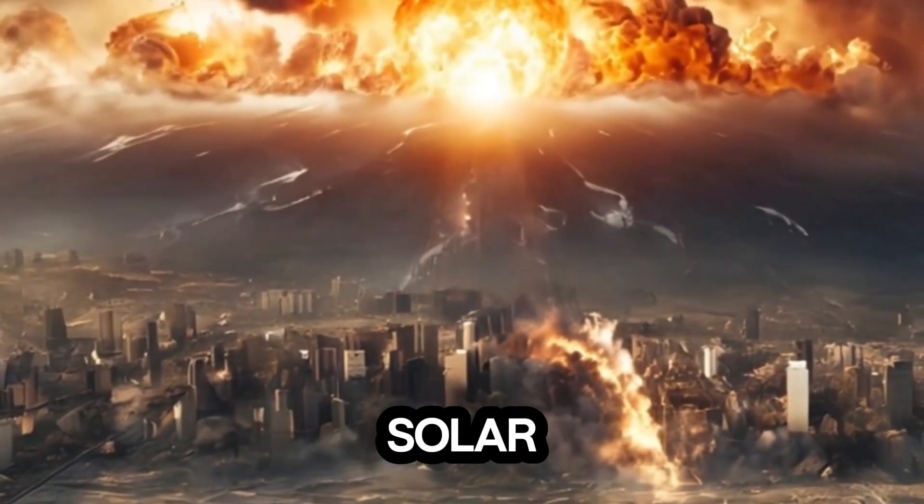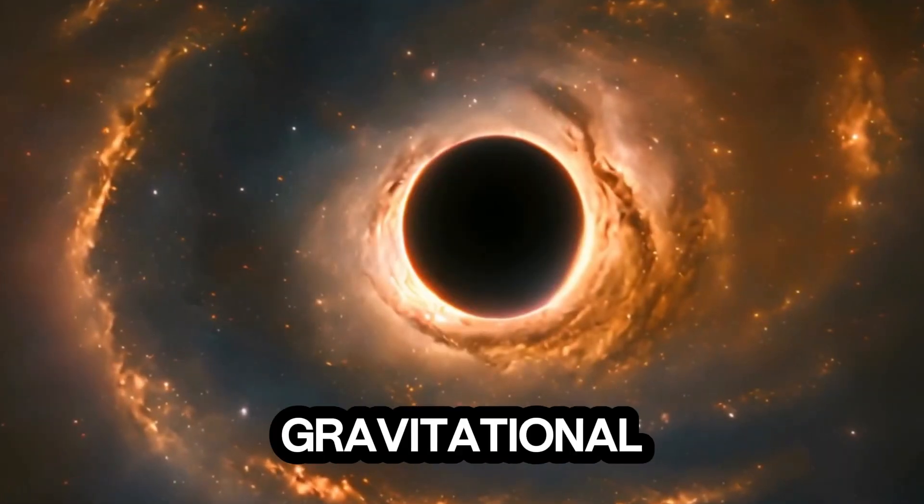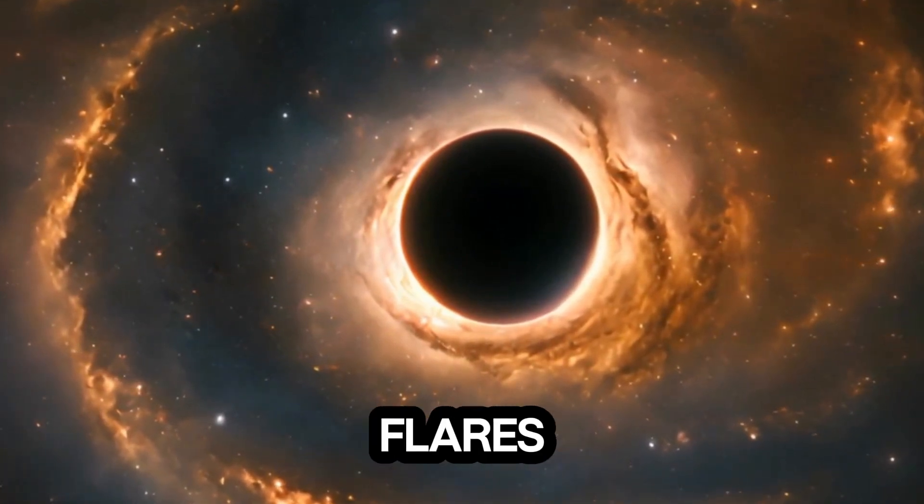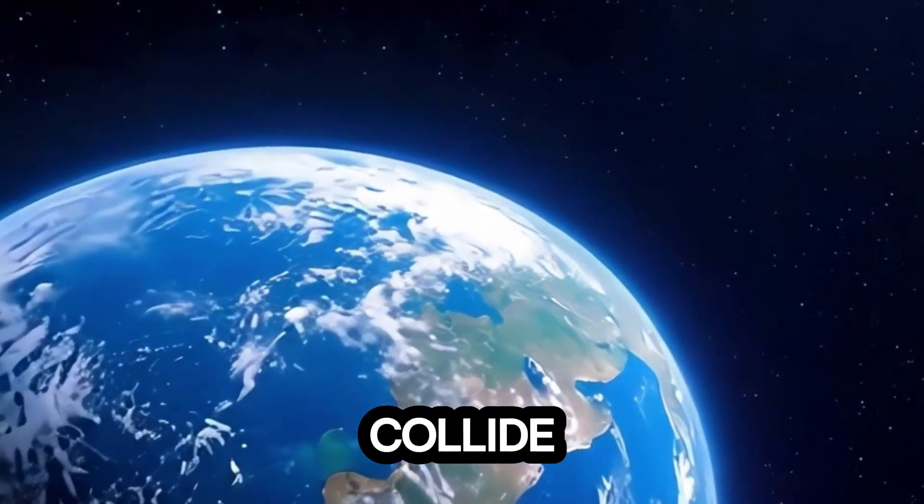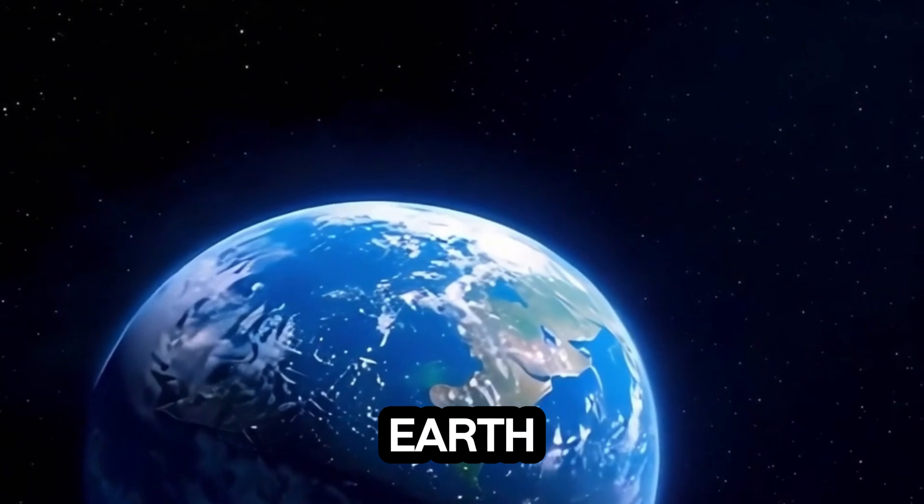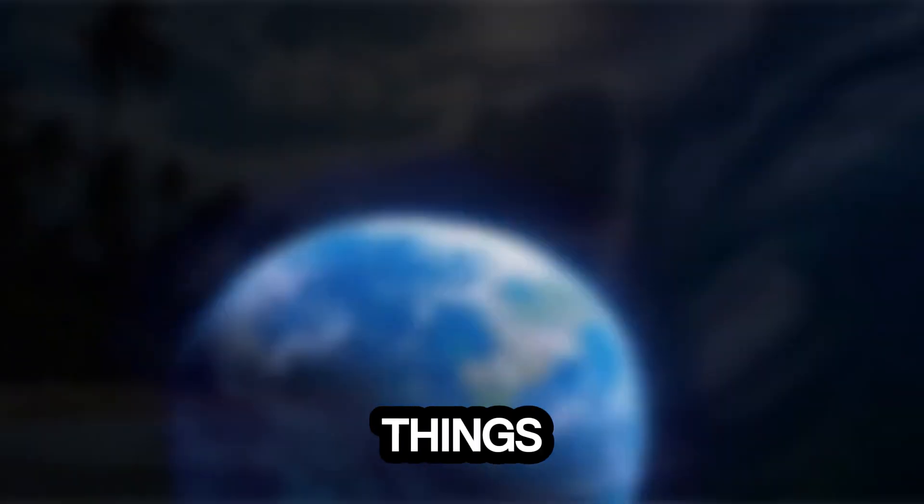Destruction of the solar system. The black hole passes near the sun. The intense gravitational pull could disrupt the sun's structure. It might trigger massive solar flares or even cause part of the sun to collapse. Planets could collide or be thrown into deep space. And if the black hole gets too close to Earth, well, that's where things become grim.